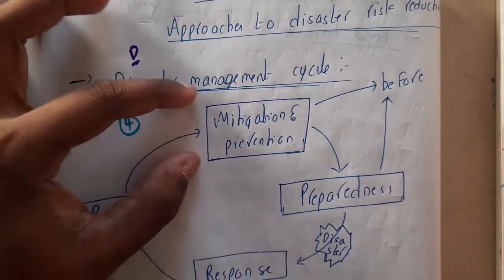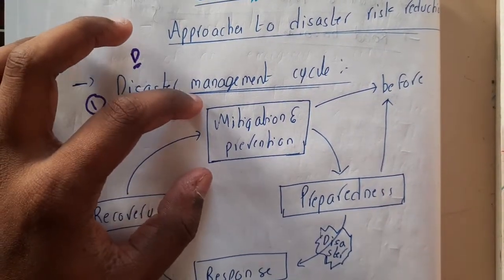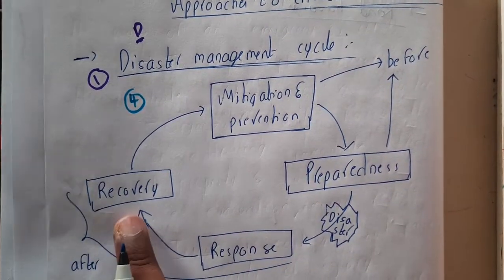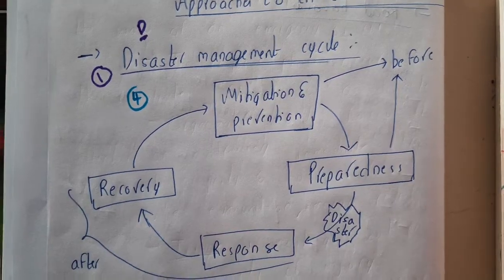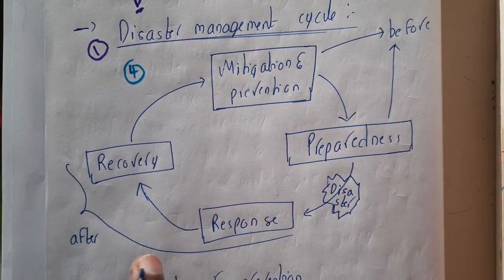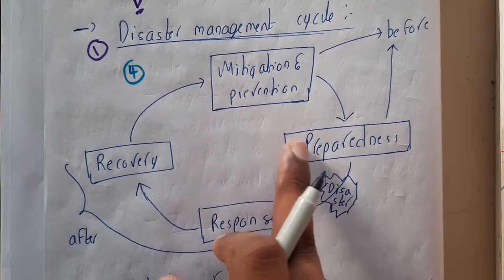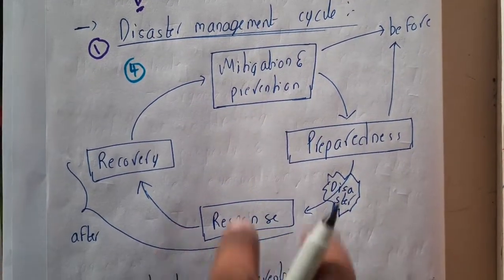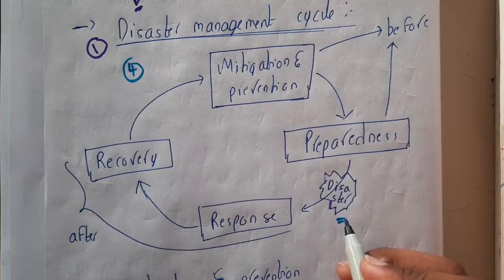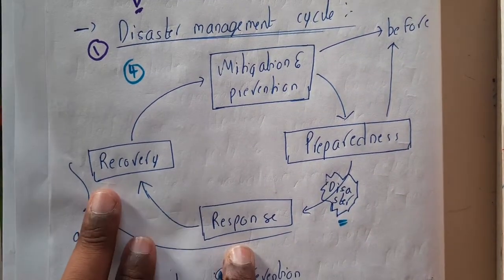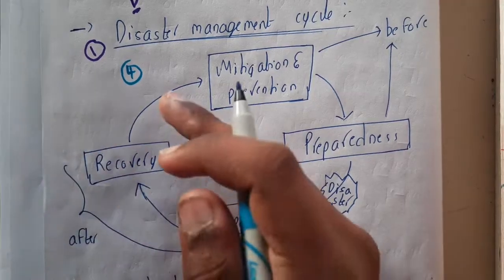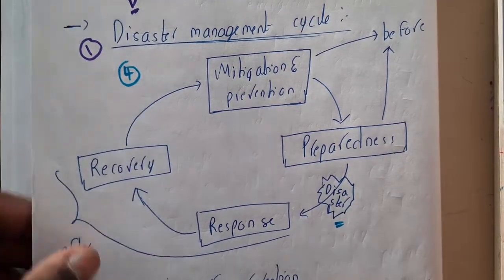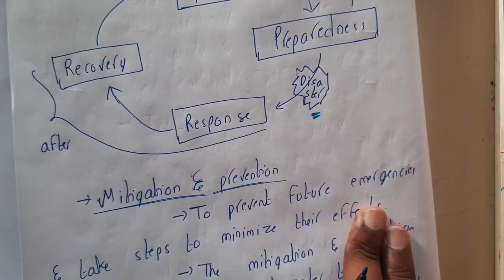Some might ask why prevention is written here alongside mitigation, but it depends — in the textbook it is given as mitigation and prevention, so that's the reason. After that comes preparedness, then response, then recovery. These are the four phases. Before the disaster, mitigation, prevention, and preparedness are done. Once a disaster occurs, we respond and recover. So these two phases come after the disaster.